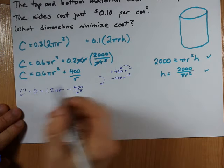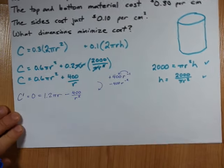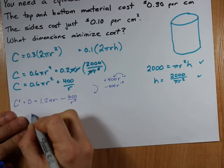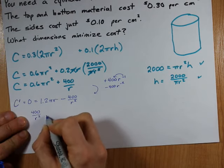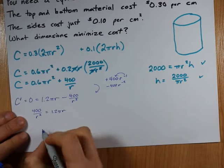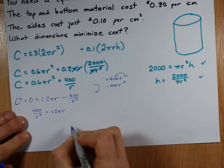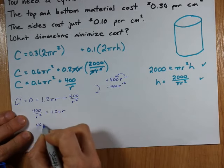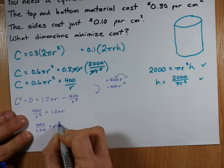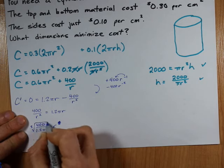I have to set this equal to 0 and solve for r. That will give me the radius that minimizes cost. So, I'm going to move this over to the other side. I end up with 400 over r squared equals 1.2 pi r. If I rearrange this, I'm going to bring the 1.2 pi over to the other side and the r squared over to this side. So, I got 400 over 1.2 pi equals r cubed. And to solve for r, I just take the cubed root of that number.